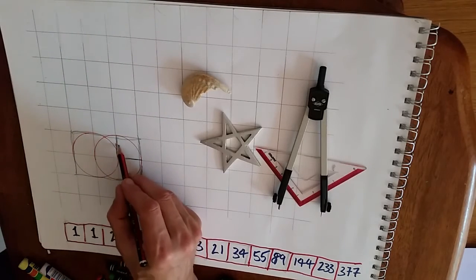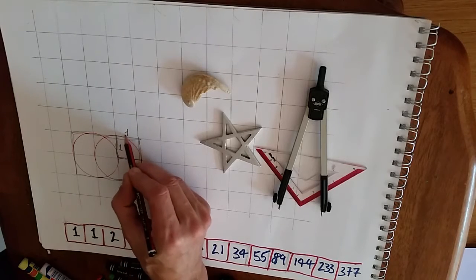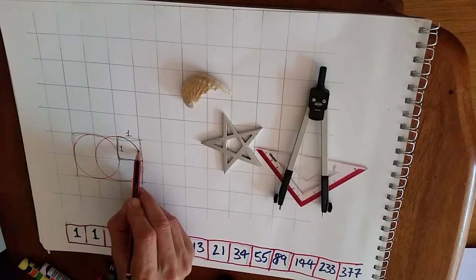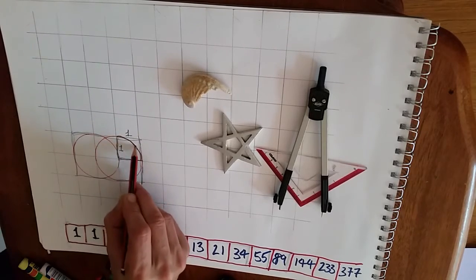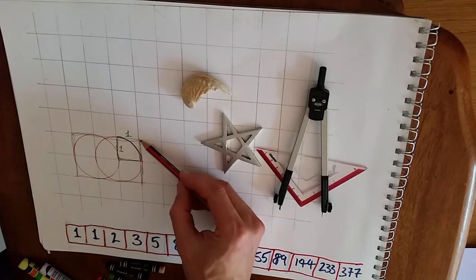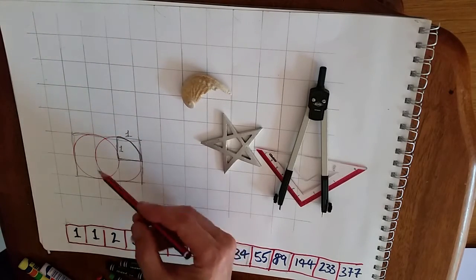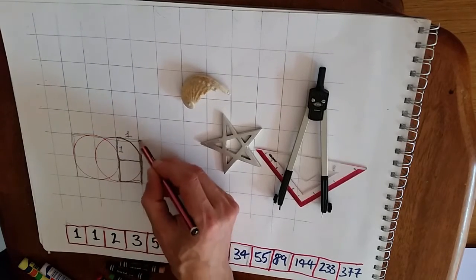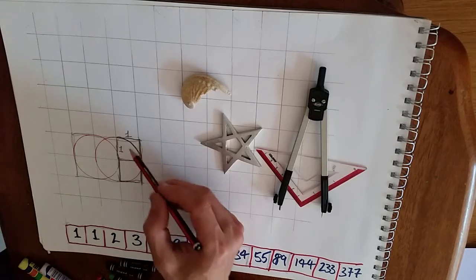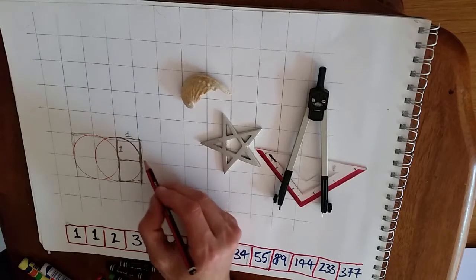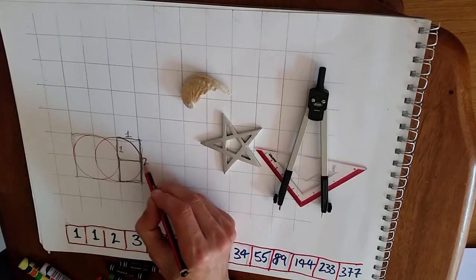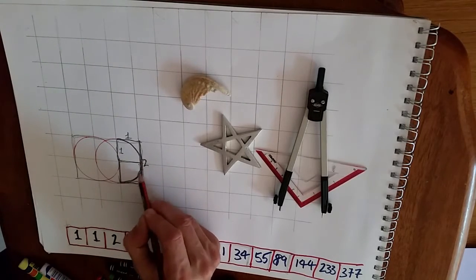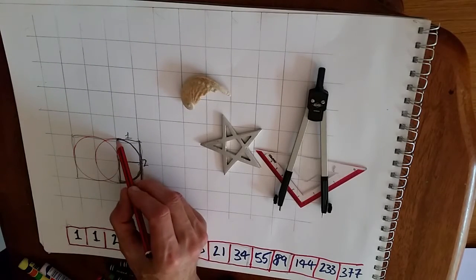All squares are one by one. Follow the pencil and highlight the circle that's already there. Now we're going to extend this square down, so now we have a rectangle which is one wide and two high, and continue with the circle of the Vesica Pisces.